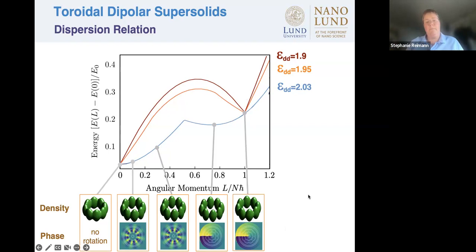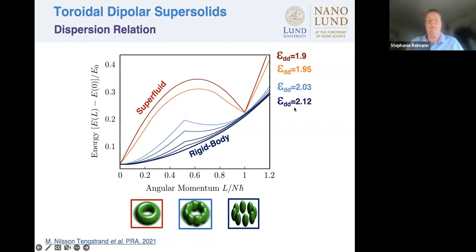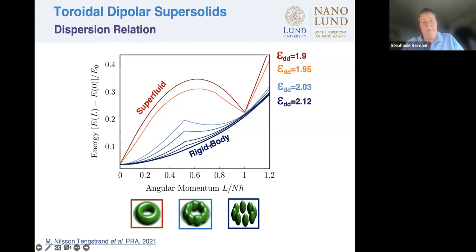At unit vortex the full unit vortex is established at the minimum. Going further and increasing ε_dd further, these large parameter values don't really affect the overall result: there is a clear transition from superfluid behavior to more or less rigid-body motion when you have a completely crystallized droplet lattice.